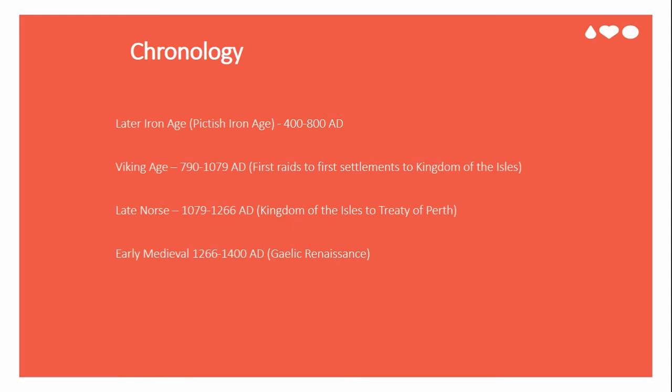For a quick chronology, because the Viking Age has different chronology country to country: before the Viking Age there's the later Iron Age, or the Pictish Iron Age, between 400 and 800 AD. It's a bit of a debate whether these people could be called Picts, but for simplicity's sake I will refer to them as Picts. Then you get the Viking Age, which begins with the first raids in the Irish Sea and ends in 1079 with the formation of the Kingdom of the Isles, which is based in the Isle of Man.